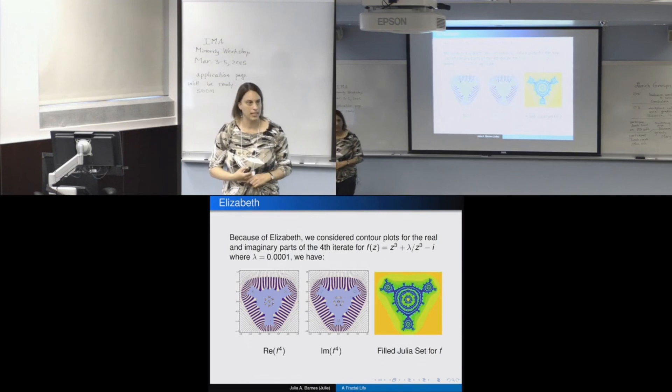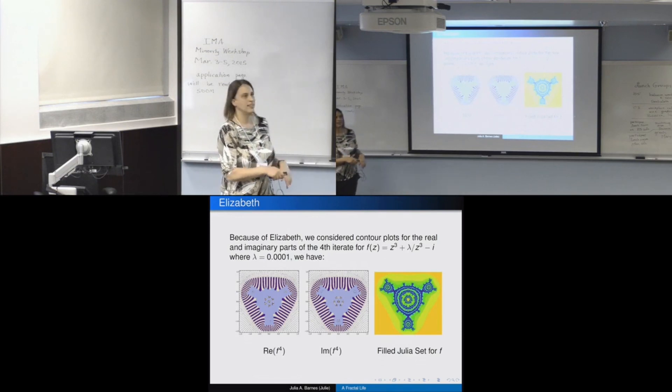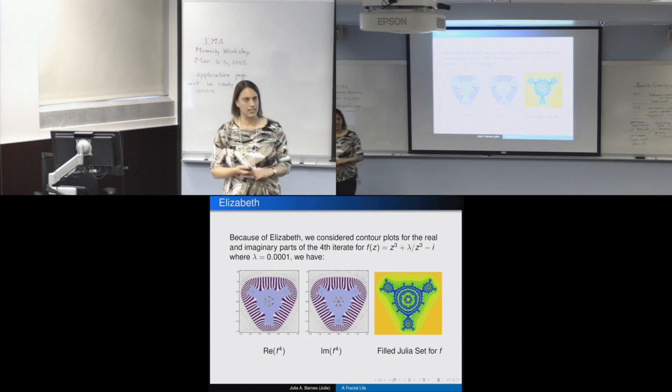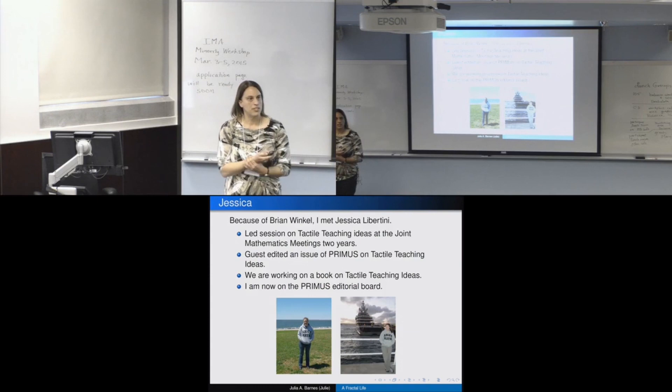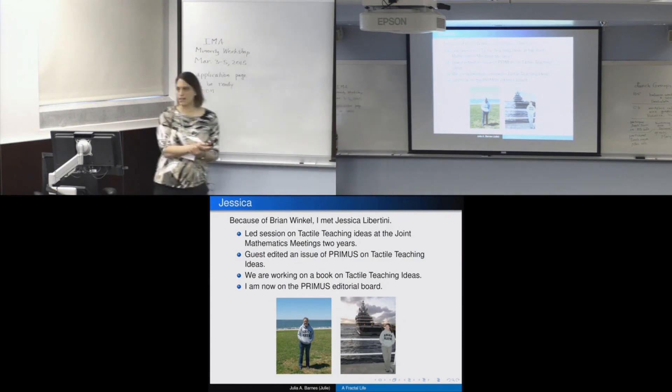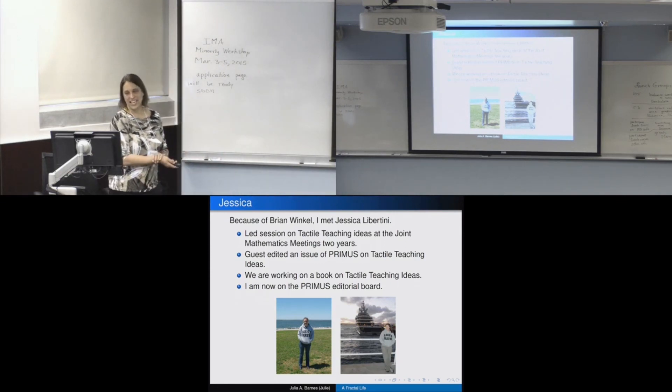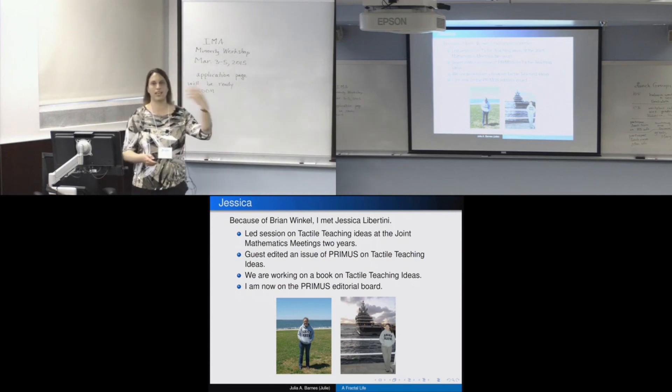And so this is the picture that we saw when we were playing with Elizabeth's functions. She'd been studying this Julia set, which is quite interesting in its own right. And our real and imaginary parts ended up doing something interesting with that as well. And our results did extend to her case. Because of Brian Winkle, I also met Jessica Libertini, who was doing a postdoc at West Point. At the time, she's at Rhode Island now. And the two of us have led some sessions at the joint meetings on tactile hands-on teaching ideas. And then we guest edited a Primus issue because of our sessions at the joint meetings. And then because of that, now we're working on a book project related to it. And if any of you do hands-on teaching ideas, please let us know because we do take submissions for this. And now I'm on the Primus editorial board. So everything just kept cascading on itself.